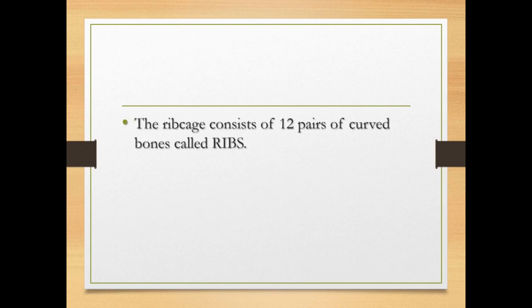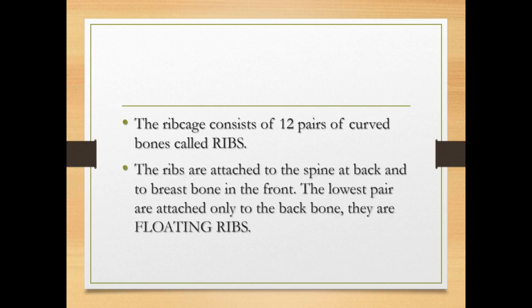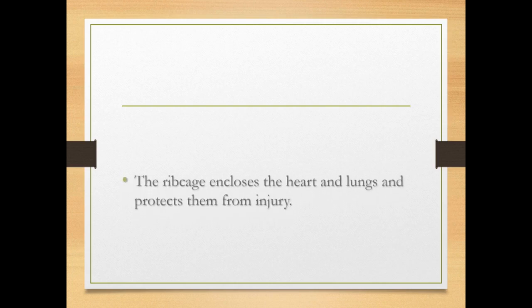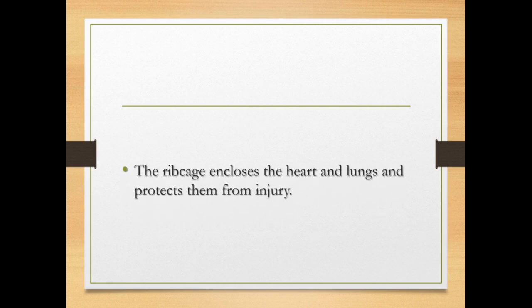The ribcage consists of 12 pairs of curved bones called ribs. The ribs are attached to the spine at the back and to the breastbone in the front. The lower two pairs are attached only to the backbone — they are called floating ribs. The important function of the ribcage is that it encloses the heart and lungs and protects them from injury.